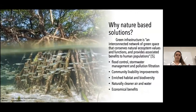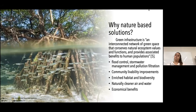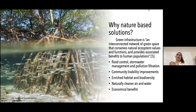We're looking at nature-based solutions because green infrastructure is an interconnected network of green space that conserves natural ecosystem values. Green infrastructure can help control flooding, stormwater management, and pollution filtration; it also improves community livability, enriches habitat and biodiversity, and produces cleaner air and water while also providing economic benefits. A case in New York City in the 1990s saved an estimated $3.5 billion by investing in green infrastructure around the Catskills rather than re-establishing their water supply filtration system.